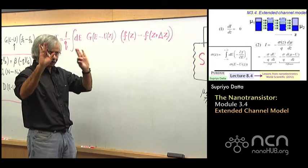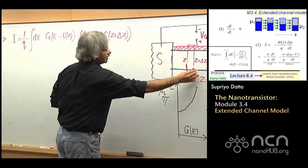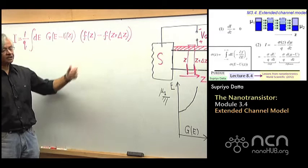And instead of F1 minus F2, which are like the Fermi functions on the two sides, we now have F at this point and F at this point — so F at Z and F at Z plus delta Z.